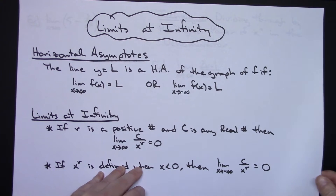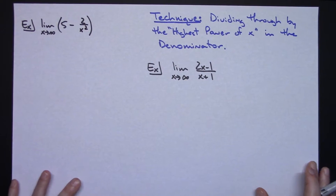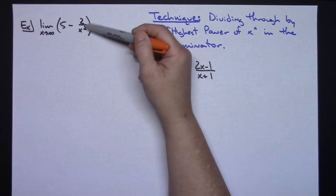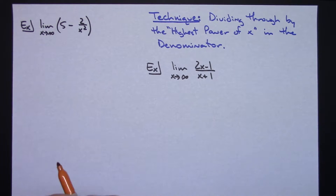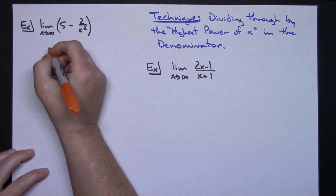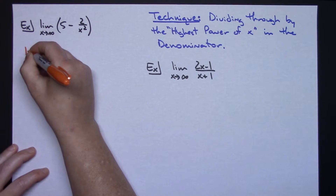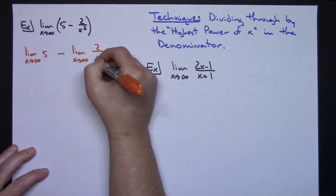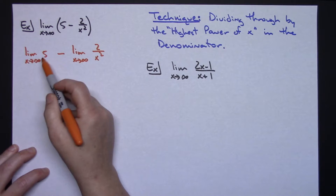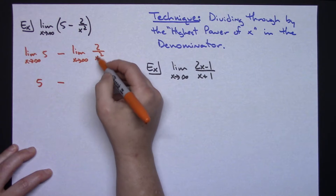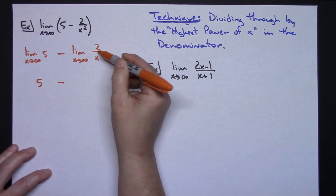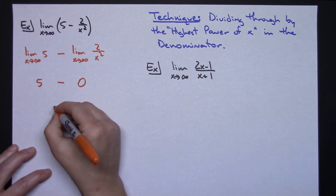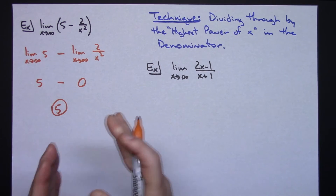Now we'll do two examples — an easy one and then a more challenging one. In this first example with a polynomial, we have something like 5 minus 2 over x squared. We can take the limit of each individual term: the limit as x approaches infinity of 5, minus the limit as x approaches infinity of 2 over x squared. The limit of a constant is just that constant, so we get 5. And that real number over x to the r, as x approaches infinity, goes to 0 by the definition we just gave. So the limit is simply 5.